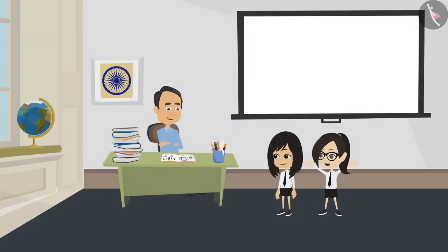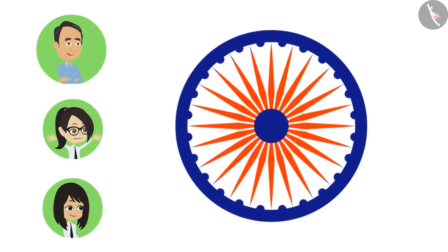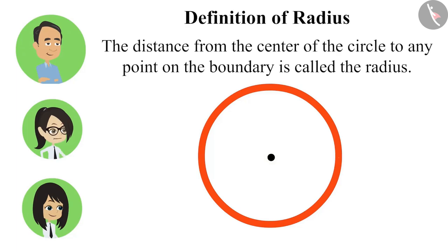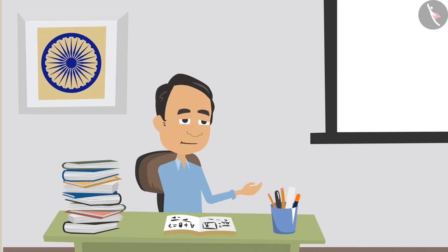Sir, my question is, why does it have so many radius? A circle can have only one radius. No, you got it wrong. Tell me, what is the radius? Sir, radius is the distance from the center to any point on the boundary of the circle.